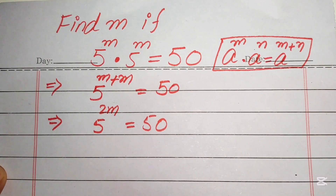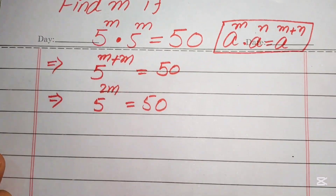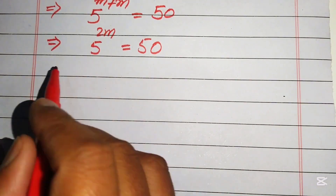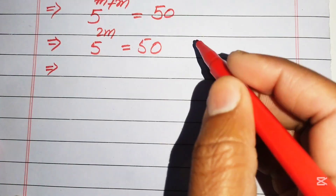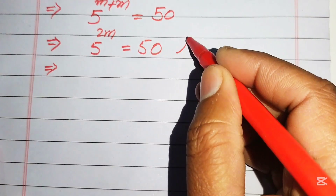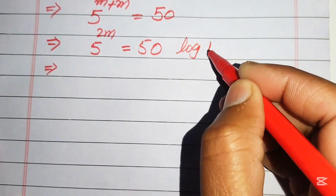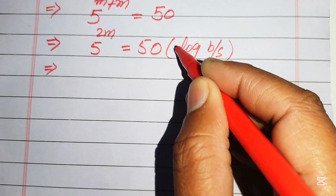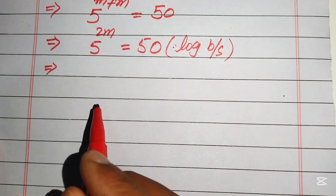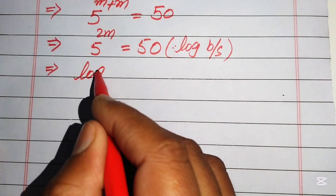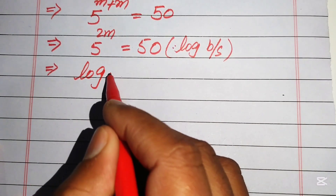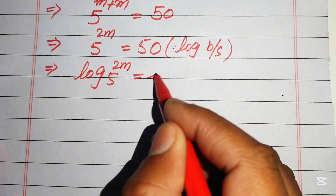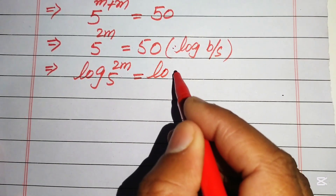Next, we take the log on both sides of the equation. Applying log to both sides gives us: log(5^(2m)) equals log(50).